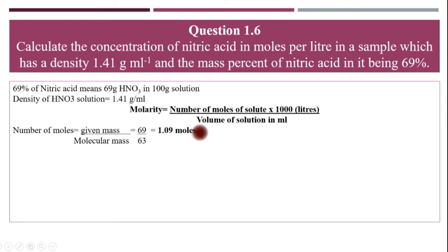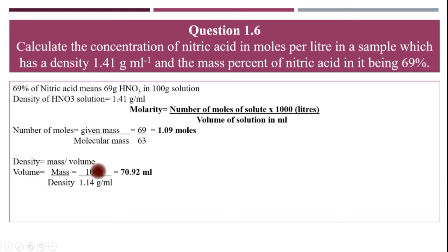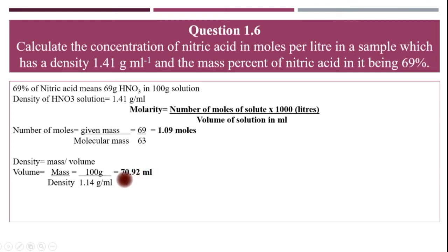Now we find the volume. Using the density formula — density equals mass divided by volume — we rearrange to find volume. The mass of the nitric acid solution is 100 grams (not just nitric acid, but the full solution). So volume equals 100 divided by 1.41 g/ml. The grams cancel out, giving a volume of 70.92 ml.